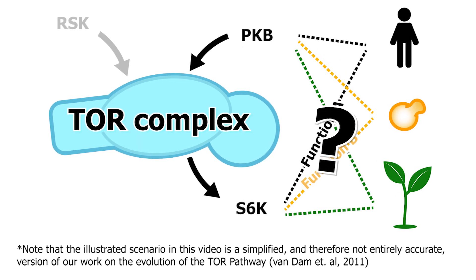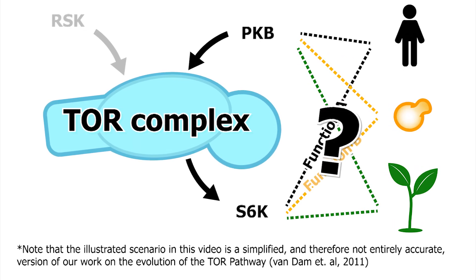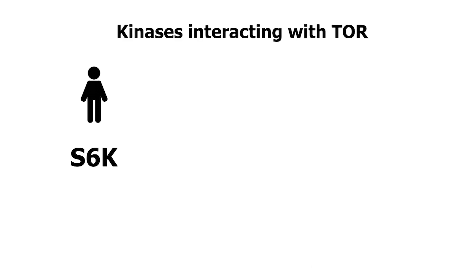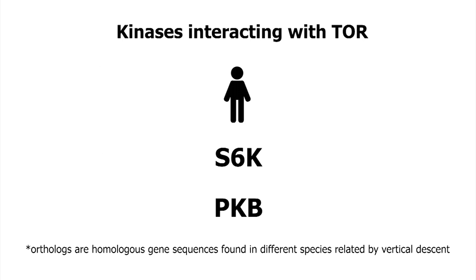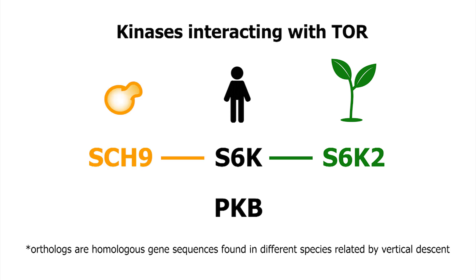How did the evolutionary history help us to solve this functional puzzle? In human we have two kinases interacting with Tor: S6K and PKB. The supposed ortholog of S6K — that is to say the protein most related to it — is S6K2 in plants and SCH9 in yeast. For PKB, the ortholog in yeast was assumed to be YPK. No ortholog was known in plants.